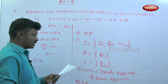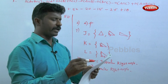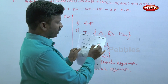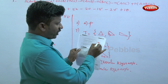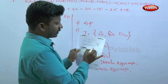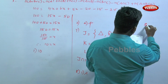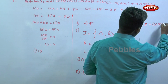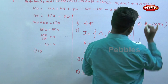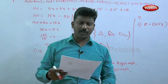The ninth question asks about the shaded region in the Venn diagram. The shaded part corresponds to Z minus (X∩Y) — the part of Z that does not overlap with X∩Y. Option three is the correct answer.